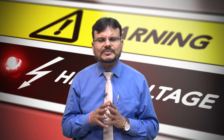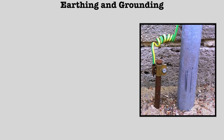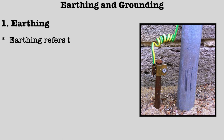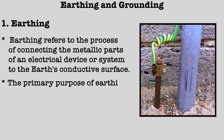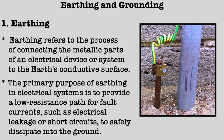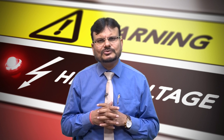Training employees in LOTO procedures and ensuring they understand its importance is essential. LOTO prevents unexpected equipment start-up which can lead to electrical shock, burns and other accidents. Compliance with LOTO procedures is mandated by various safety regulations. Earthing refers to the process of connecting the metallic parts of an electrical device or system to the earth's conductive surface, typically through a metal rod buried in the ground. The primary purpose is to provide a low-resistance path for fault current to safely dissipate into the ground.